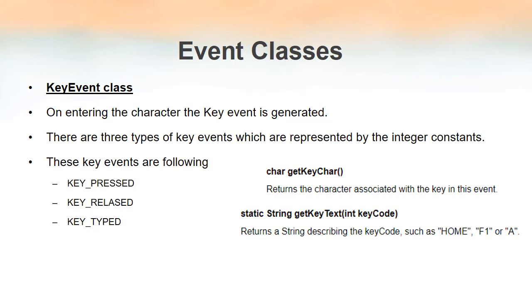Two methods available inside the KeyEvent class are getKeyChar and getKeyText. getKeyChar is used for getting the character of the key that is pressed. getKeyText returns a string description of the key that is pressed — for example, if you press the Home key on the keyboard, this method will return 'Home' as the result.